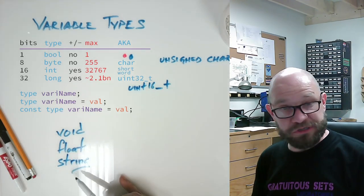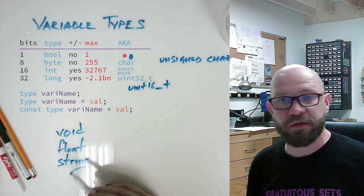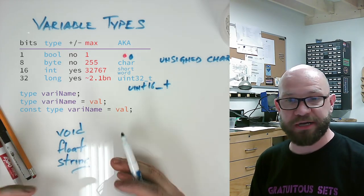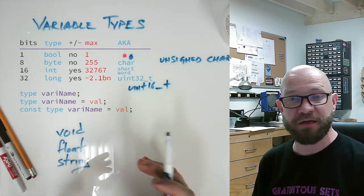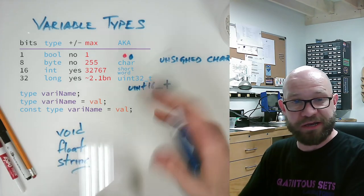And last, if you can see through the glare, there is a string. A string is basically how you're going to use one of these data buckets to store a line of text instead of just a regular number.